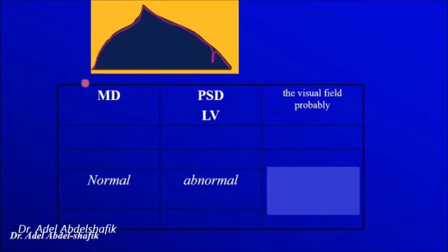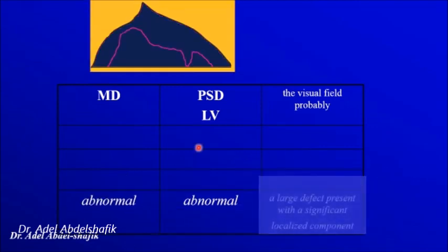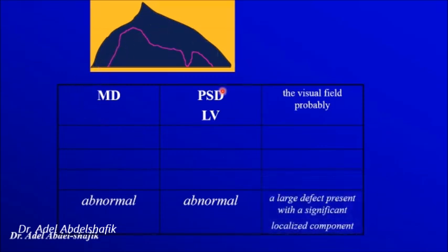In the third example, only one location is affected. This disturbs the standard deviation but has no meaningful effect on the mean across 54 or 76 points, so we get a normal mean deviation and an affected standard deviation — indicating pure localized changes. In the last example, all points are affected and some are more depressed than others, so both the mean and the standard deviation are abnormal — representing both generalized and localized depression.